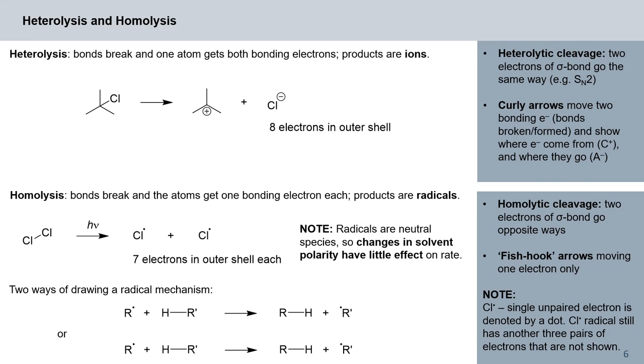So we've briefly introduced the concept of homolysis. Homolysis is the process in which bonds break and the atoms get one bonding electron each. So products of homolysis are radicals. Contrast that with heterolytic cleavage or heterolysis. Here when we break a bond, one atom gets both bonding electrons and the products of such heterolytic cleavage are ions. So let's go through these examples in more detail.